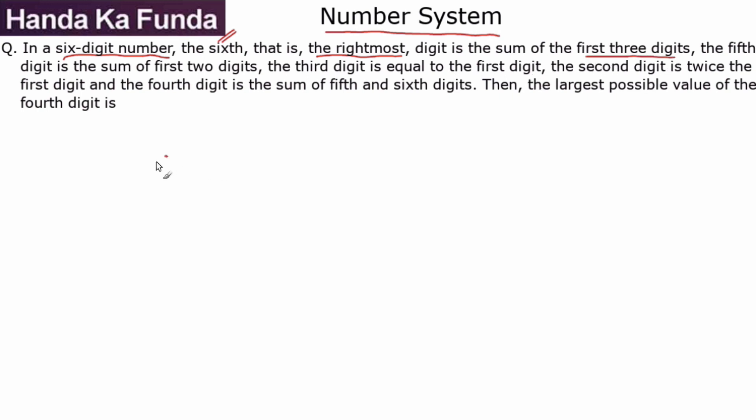Let's say the first three digits are A, B, C. Then the last digit is A plus B plus C. We also know that the fifth digit is the sum of the first two digits, so the fifth digit is A plus B.